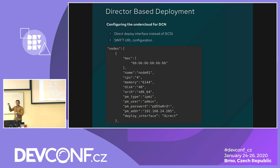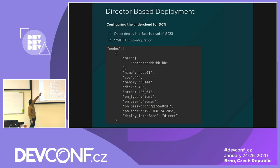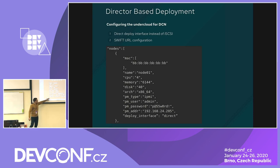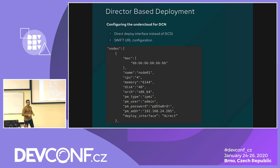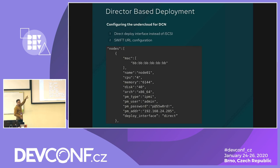In the JSON file I need to define parameters for each node so it is visible to my OpenStack cloud. I mention the MAC address, name of the node, number of CPUs, memory, physical machine type, username, password, and address. The important thing is the deploy interface direct — that is the key change needed in the undercloud. The second change is Swift URL — Swift is object storage in OpenStack, used to store images and data, and it handles transferring data from edge nodes to the central site.